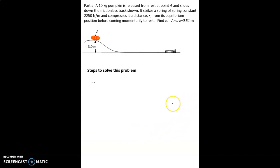In this problem we're going to be analyzing a pumpkin sliding down a hill and hitting a spring. We're supposed to figure out how much the spring gets compressed. First thing we want to do is lay out the steps that we're going to use to solve this problem.